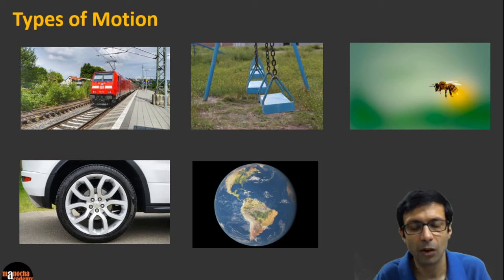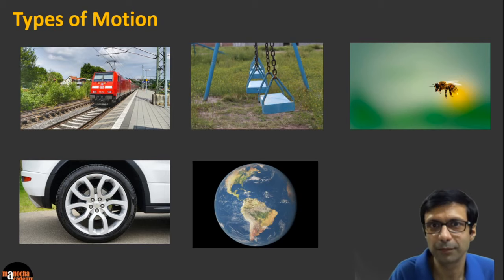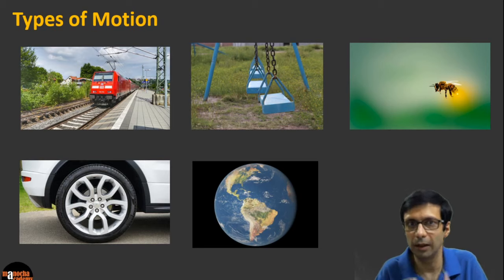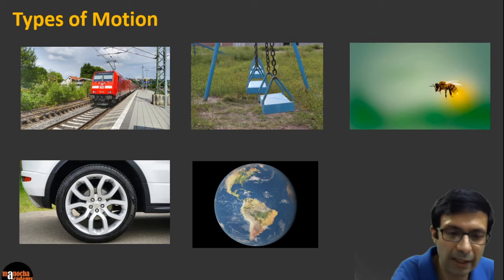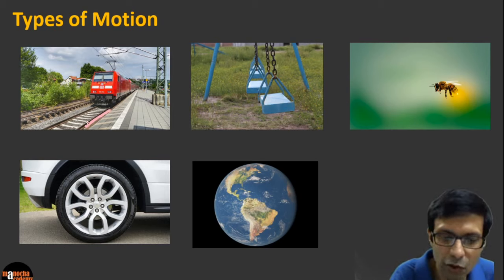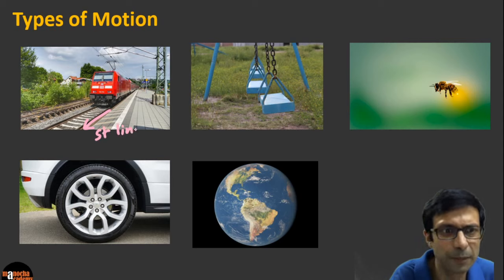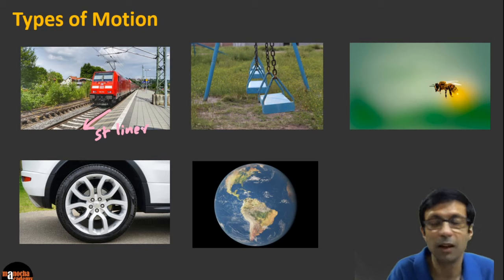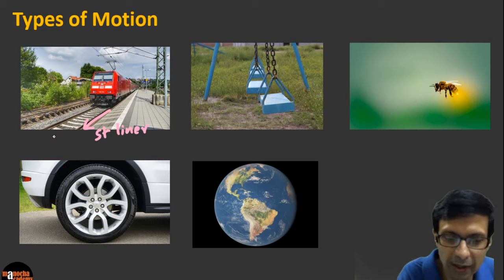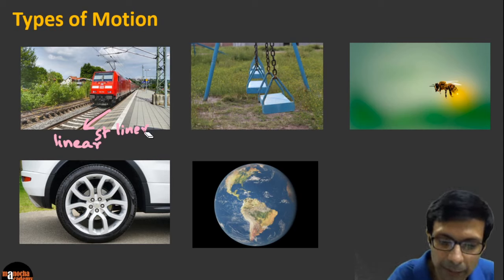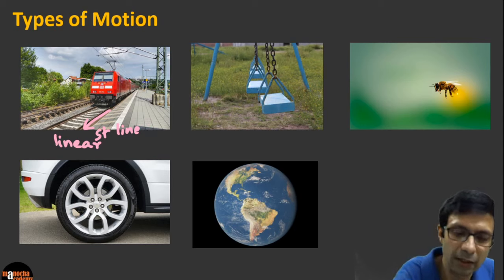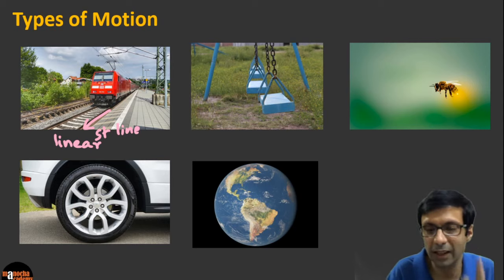When a train is moving on a straight line track, we can say it's in linear or rectilinear motion because the train is moving in a straight line. This type of motion for the train is linear motion.